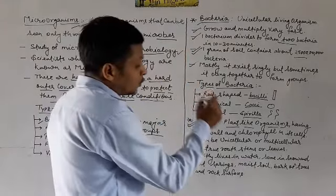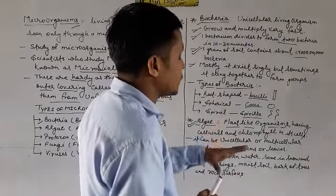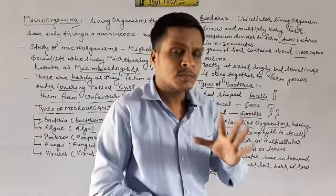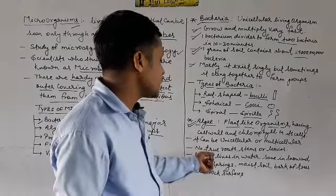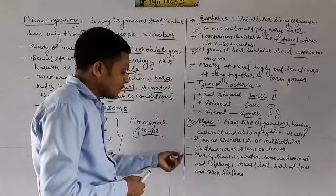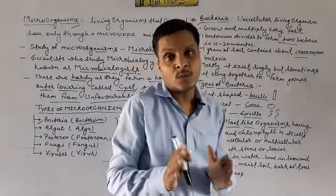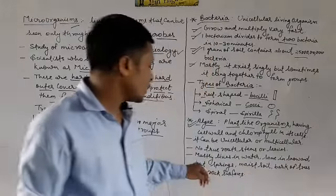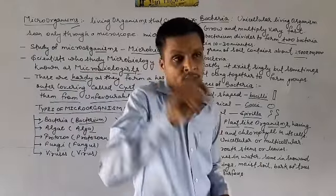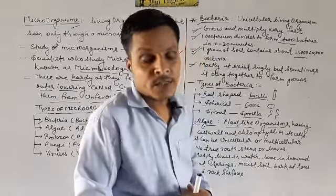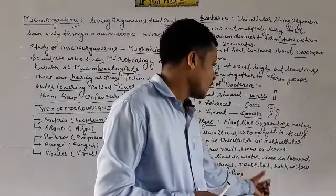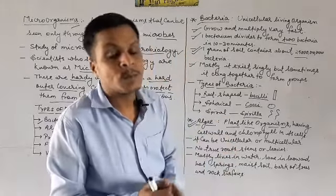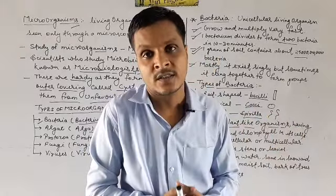Algae have no true roots, stem, or leaves — their shape and size are not fixed. Mostly algae live in water — rivers and ponds. Some algae are also found in snow, hot springs, and even survive in volcanic eruptions. They are also found in moist soil, on the bark of trees, and on rock surfaces — wherever there is a little moisture, algae can grow there.